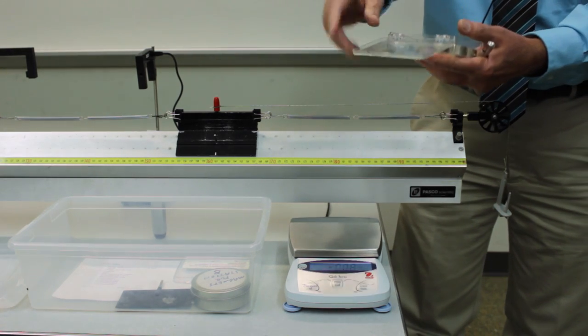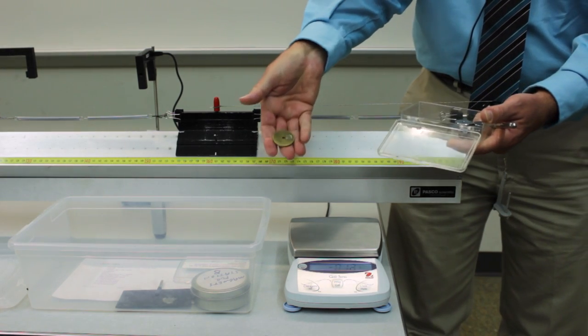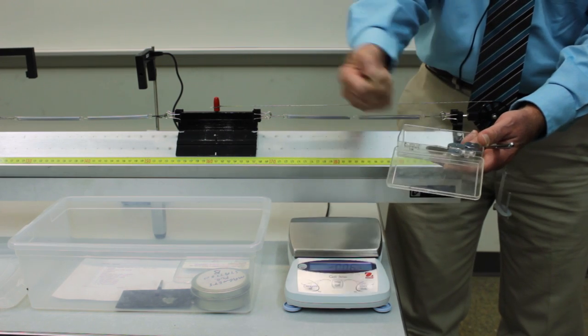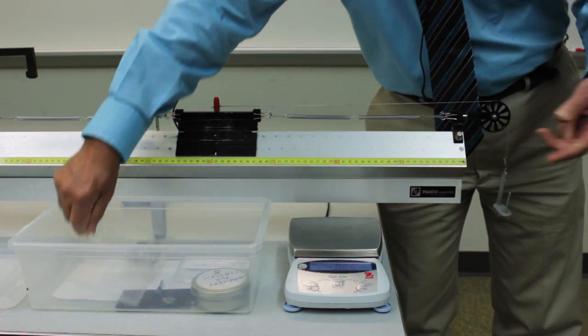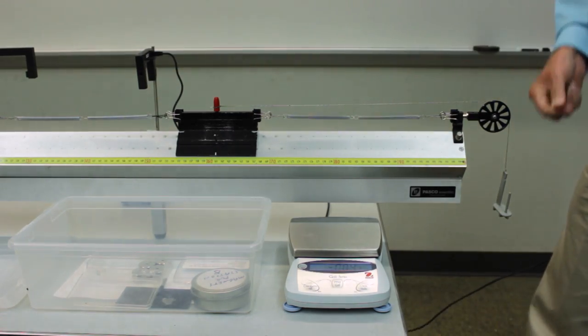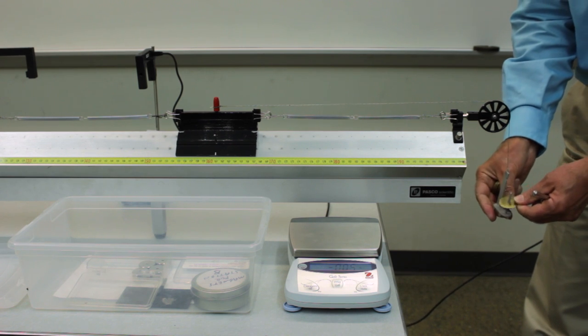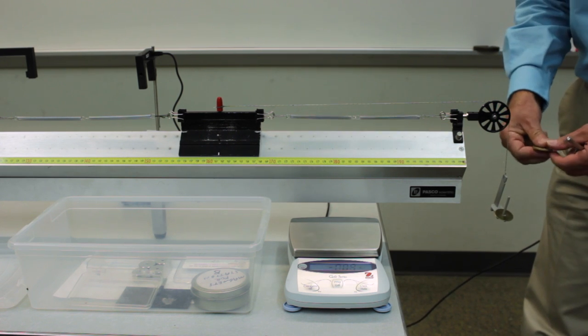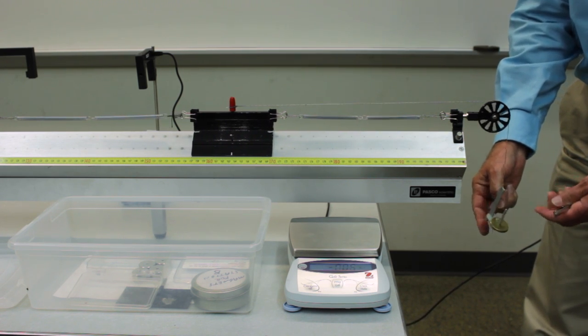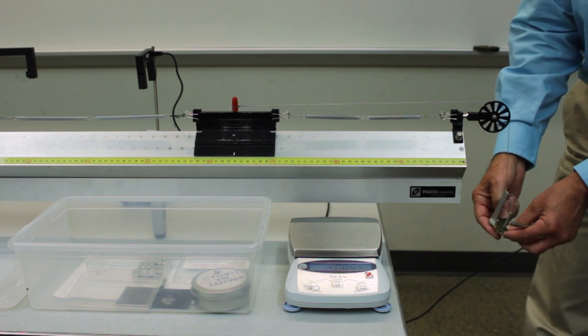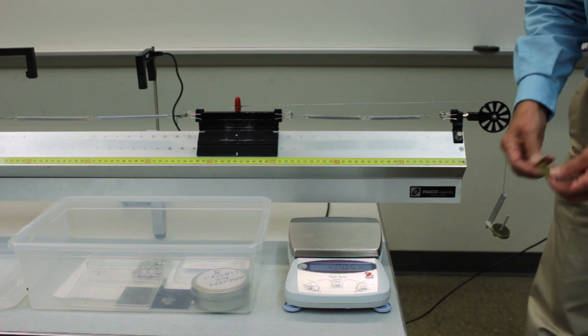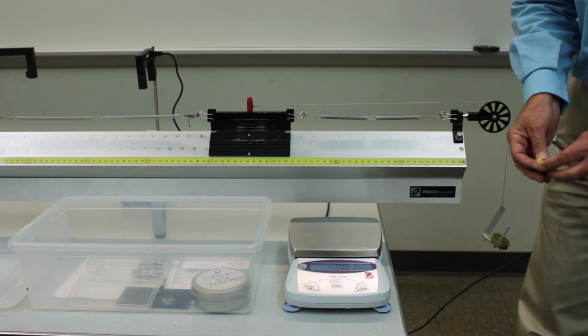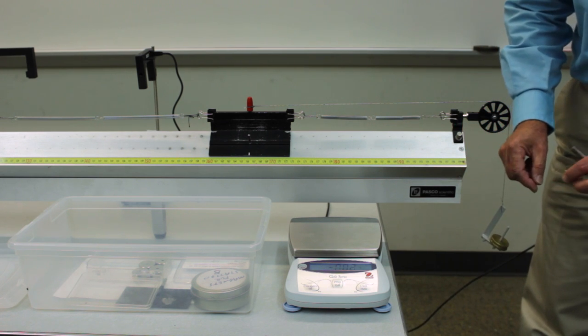And we'll plot a graph of the force against the displacement to determine the spring constant. So to vary the force, we have a number of masses. These little brass discs are the ones that you should use. And one by one, you just hang a little more mass on the hanger, record the new position and add a little more mass and so forth.